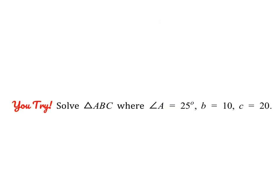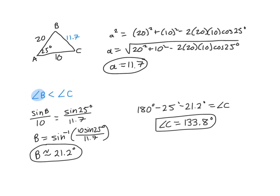Go ahead and pause the video and give this example a try. With the given information, we can't use law of sines, so we use law of cosines to find side A, which is approximately 11.7. Then we set up a law of sines equation. Since angle B is less than angle C based on opposite side lengths, we find the smaller angle first — angle B is approximately 21.2 degrees. Using the triangle sum theorem, angle C is 133.8 degrees. Arc sine can never give an obtuse angle, so always pick the angle you know to be acute.